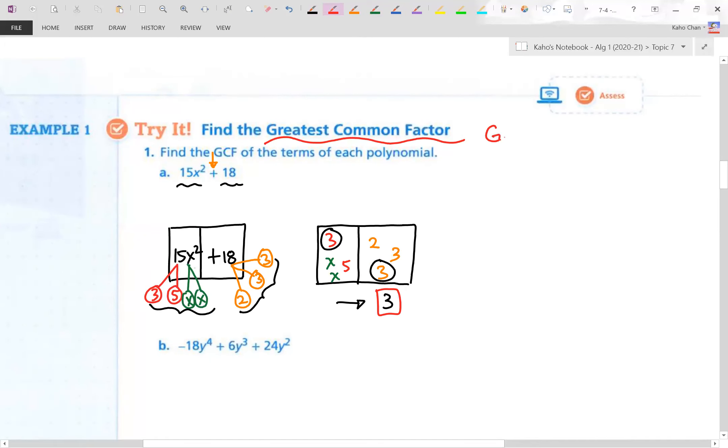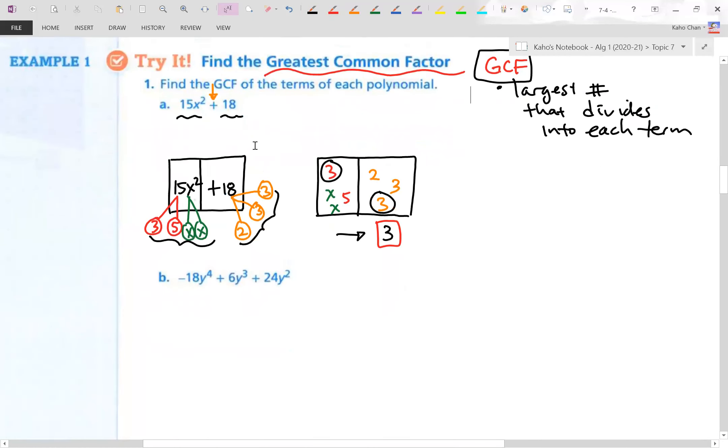There it is, the greatest common factor. Sometimes we call it GCF, right? This is the largest number that divides into each term. And that's all we're doing today. Let's do that to the next polynomial. In this case, we have 3. Any questions about 1a?